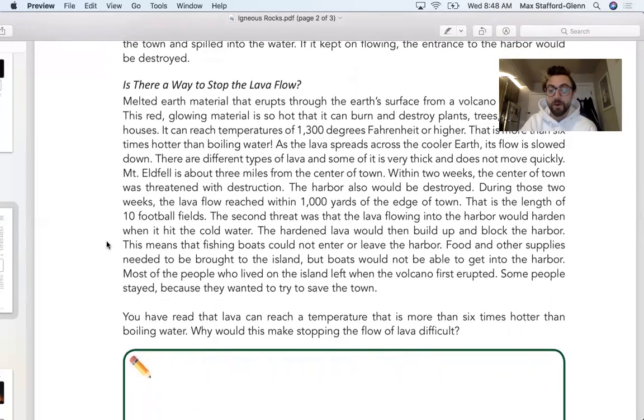The harbor would be destroyed. During those two weeks, the lava reached within a thousand yards of the edge of the town - that is the length of 10 football fields. The second threat was that the lava flowing into the harbor would harden when it hit the cold water. The hardened lava, when it cools down, it forms igneous rocks. The hardened lava would then build up and block the harbor.